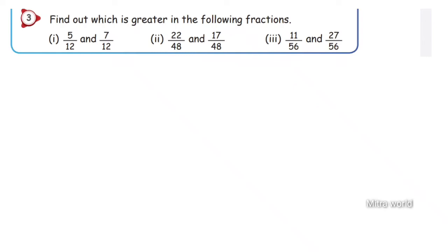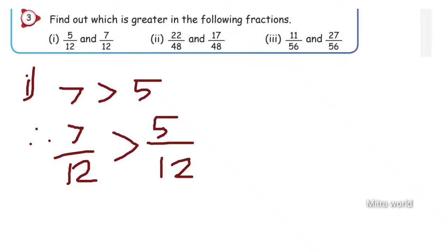Question 3: find out which is greater in the following fractions. First problem: 5 by 12 and 7 by 12. The denominators are the same, so we compare the numerators. Since 7 is greater than 5, therefore 7 by 12 is greater than 5 by 12.